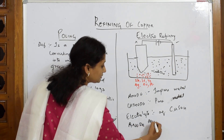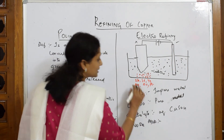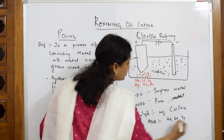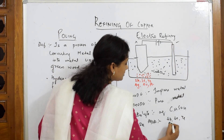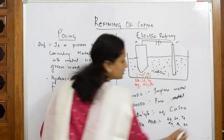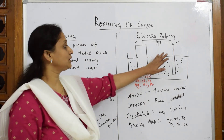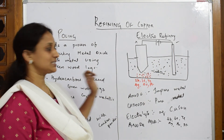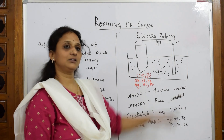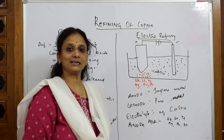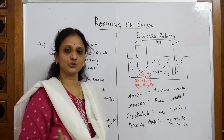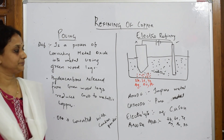All the impurities settle below the anode — this is called anode mud. Anode mud contains tin, selenium, tellurium, silver, gold, and platinum in trace amounts. The pure copper deposited on the cathode can be scraped off and used further.